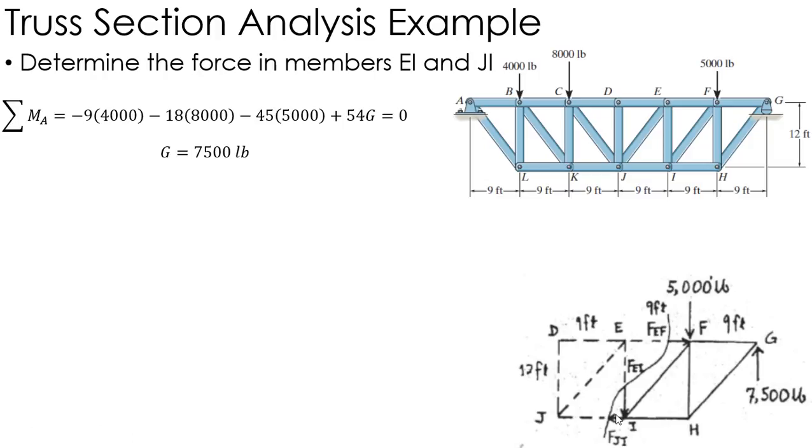First, I want to find JI and EI. To find JI, I can sum the moments about E to get rid of forces EF and EI, leaving just JI. Summing moments about point E: negative 9 times 5000, plus 18 times 7500, minus 12 feet times FJI equals zero.